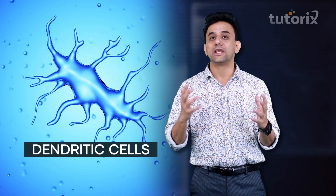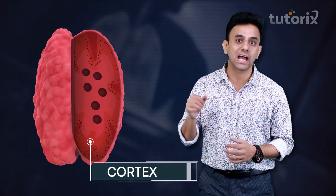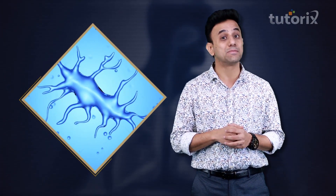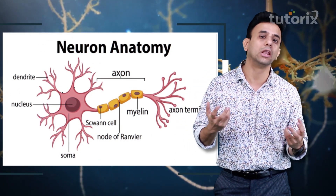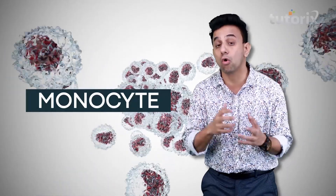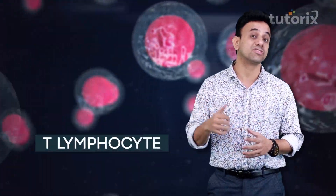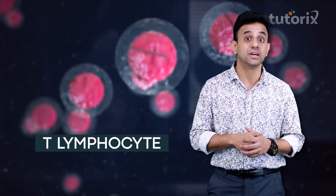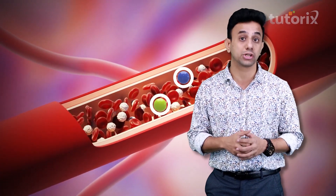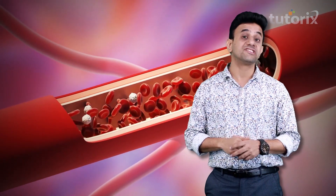The dendritic cells are present in the cortex of the thymus gland and are so named because they have long processes just like the dendrites of a neuron. The dendritic cells are actually precursors of monocytes and play a very important role in the maturation of T lymphocytes. In fact, these cells secrete thymic hormones, which again play a very major role in the maturation of T lymphocytes.